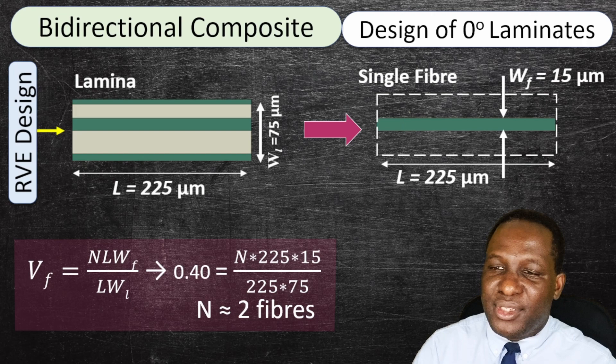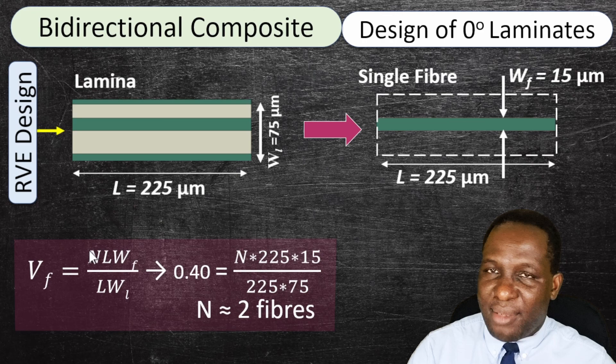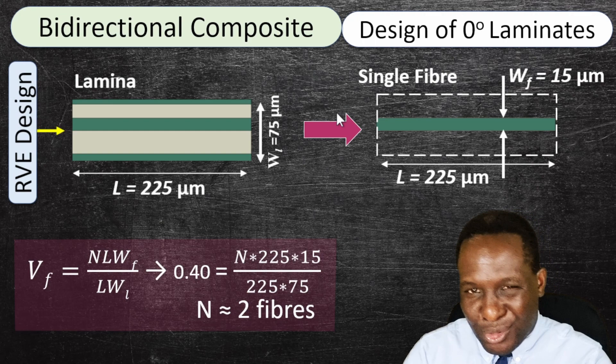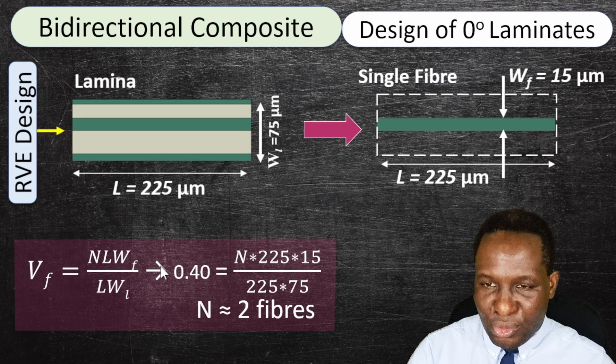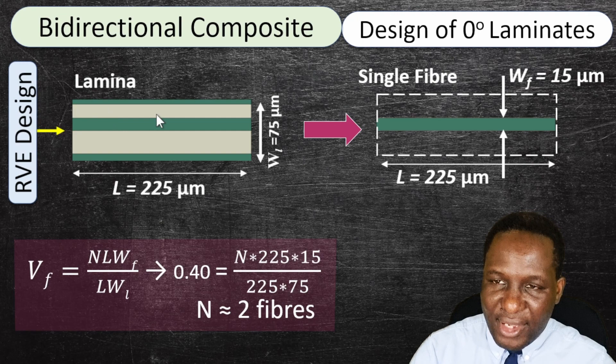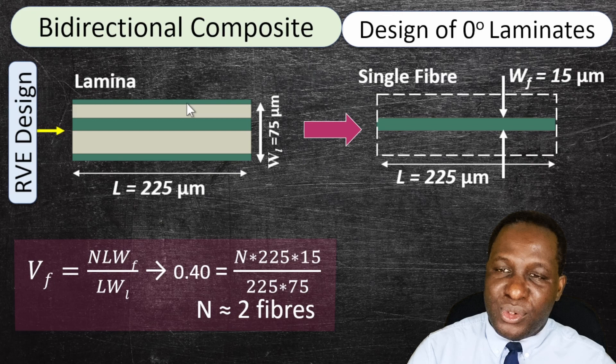For this 2D analysis, when you do the calculations for a 40% volume fraction, we need two fibers in this window. We have one fiber and another fiber replicated periodically on the other side to create the two fibers required. This will be shown when we start modeling.